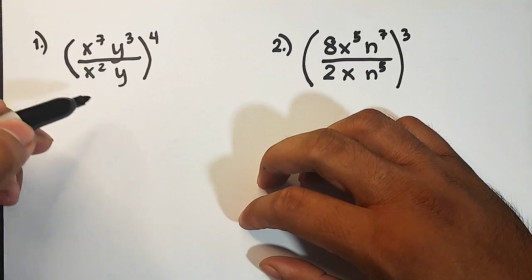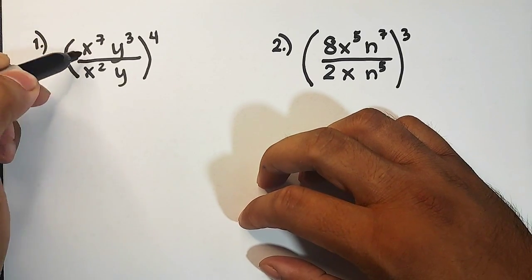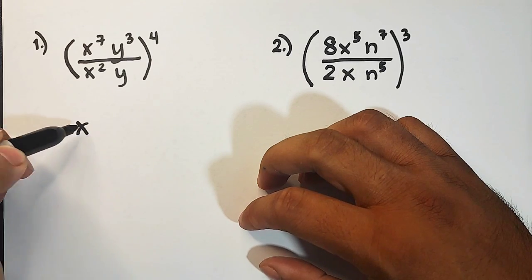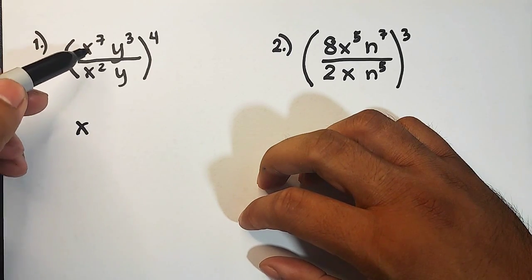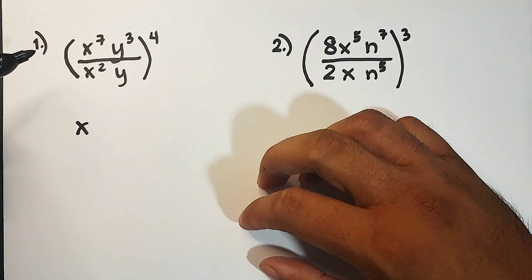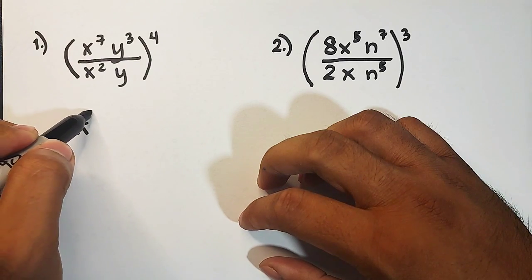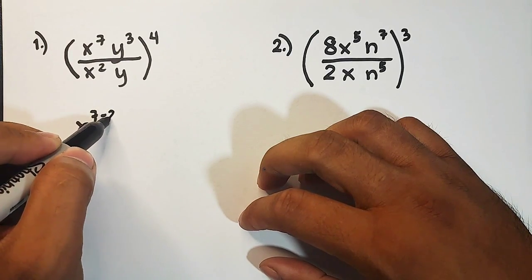So let's start with letter x or the variable x. In letter x, you will copy first the variable, then you will subtract exponents from the numerator up to the denominator. That is simply 7 minus 2.